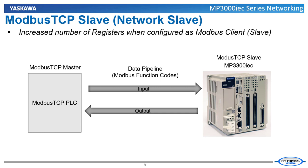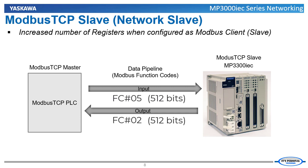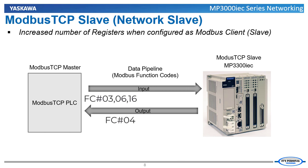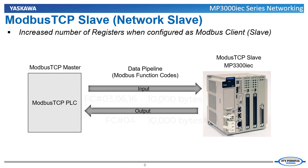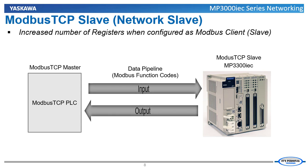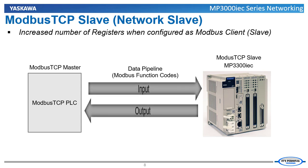Looking at Modbus TCP, function codes 2 and 5 can transfer up to 512 inputs and coils, or function codes 3, 4, 6, and 16 can transfer and store up to 10,000 bytes of data. This allows more data to be stored and transferred between multiple devices, thus allowing for bigger and more complex applications.